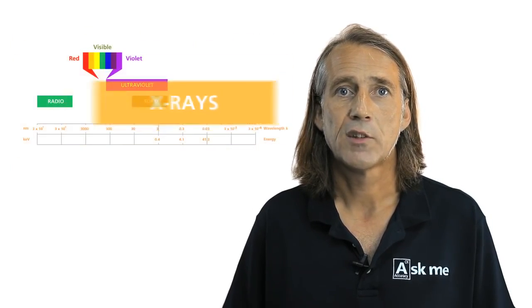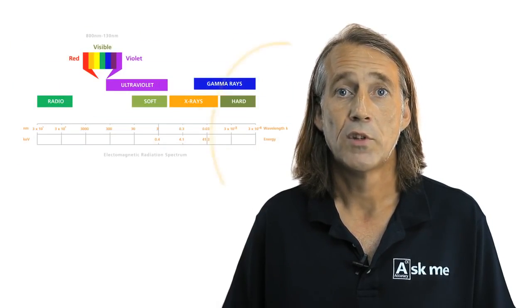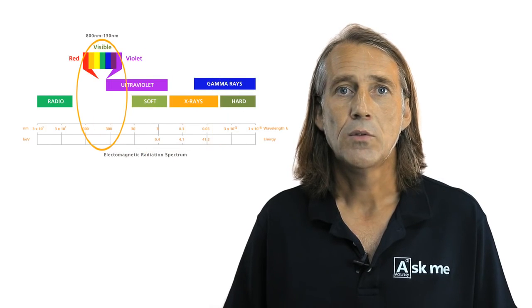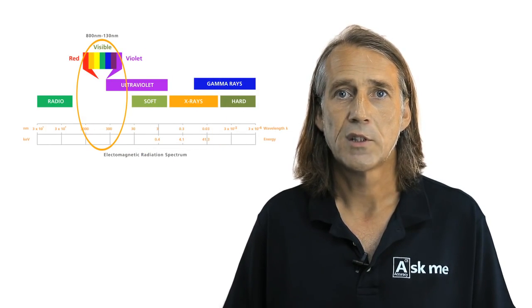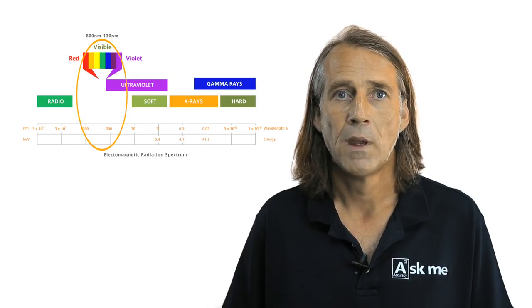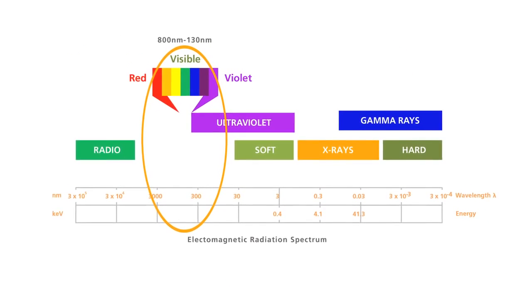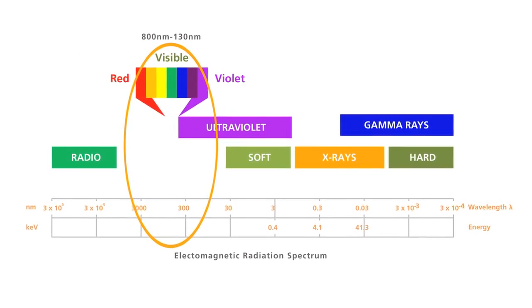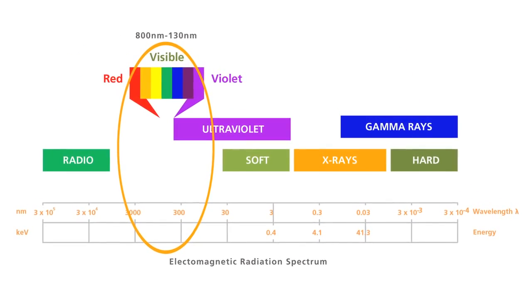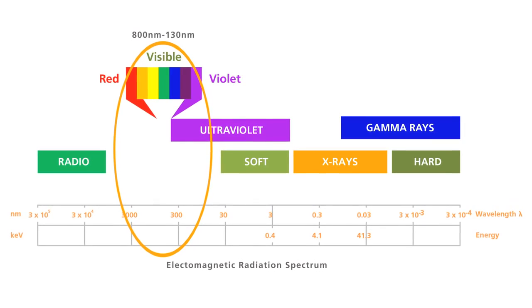The part of the electromagnetic spectrum used by OES includes the visible spectrum and part of the ultraviolet spectrum. In terms of wavelengths, that's from 130 nm up to around 800 nm.